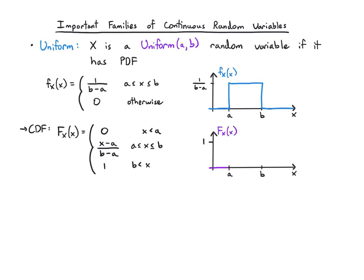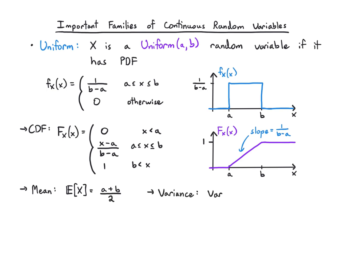It just goes straight up and then stays at one. The mean is going to be right in the middle — it's (a + b) / 2 — and the variance is (b - a)² / 12. We're used to seeing that 12 in the discrete uniform case. The only real difference between discrete uniform and continuous uniform is that discrete uniform takes integer values between a and b, whereas here you can take any real values between a and b.